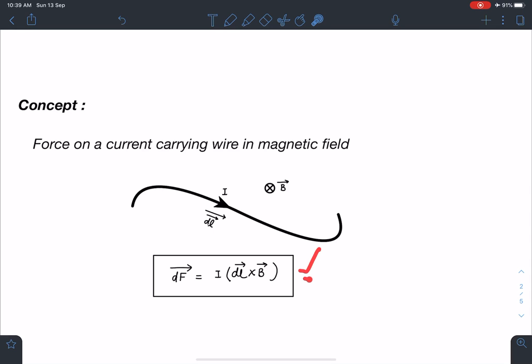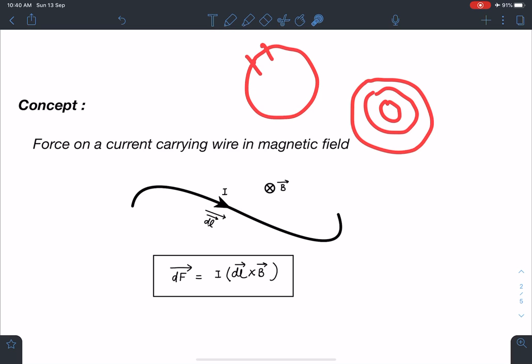So first we need to calculate what is the field inside this cylinder, and this cylinder can be assumed as if it is made of many many cylindrical shells, and cylindrical shell can be assumed as if many small small wires are placed along a circle. So these two logics I am going to use here.